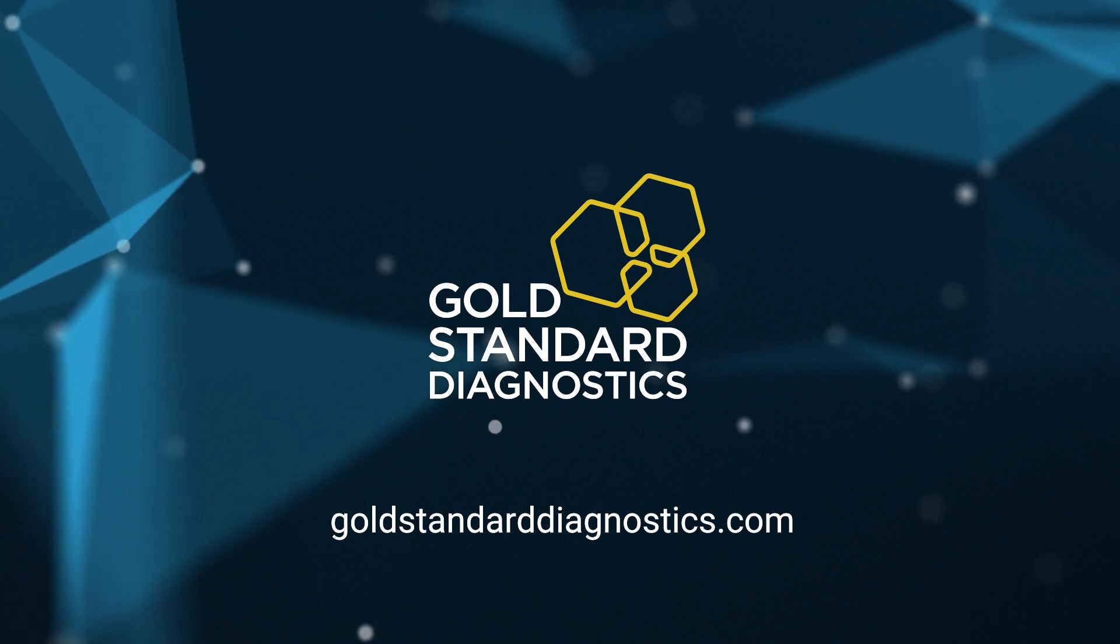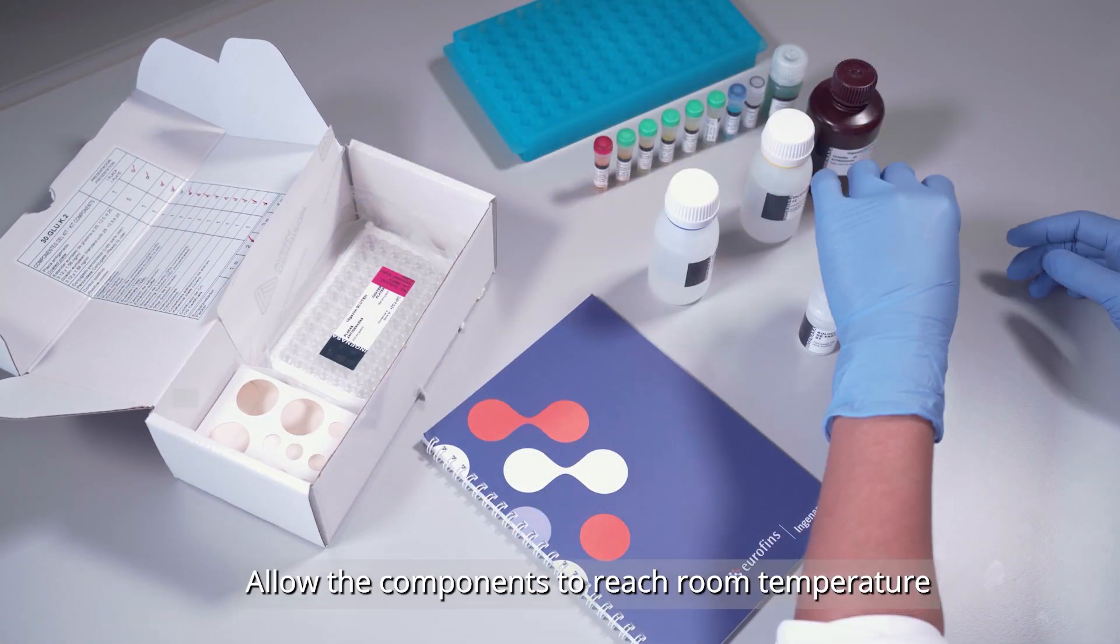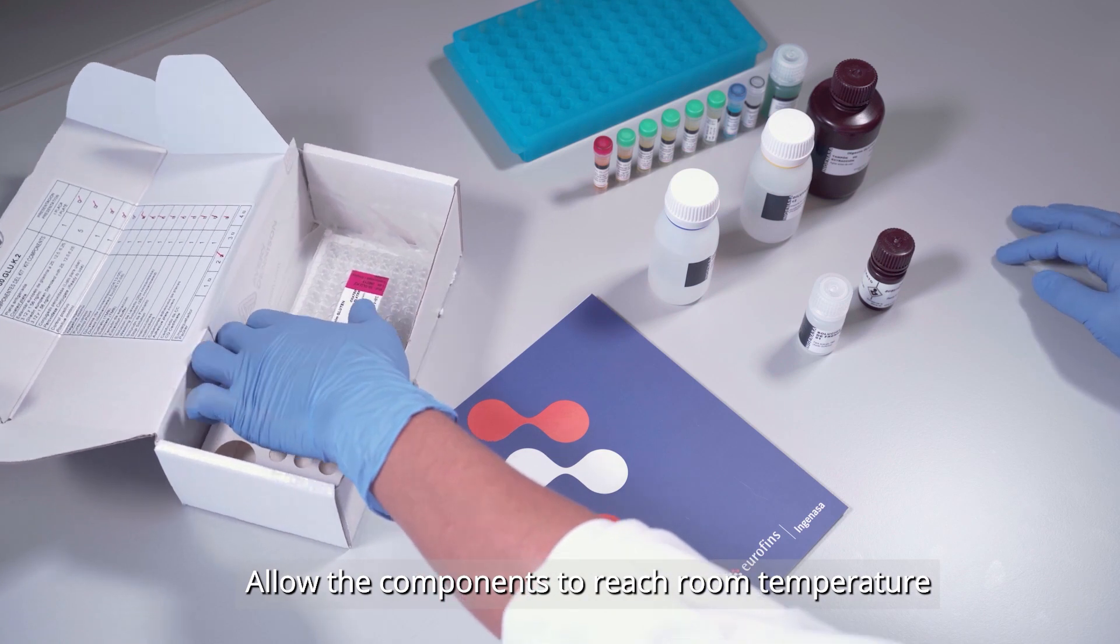IngeSim gluten is an ELISA based on the R5 monoclonal antibody for the detection of gluten in foodstuffs and environmental samples. Allow the components to reach room temperature.